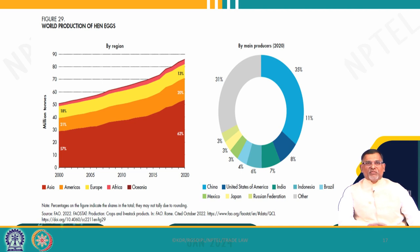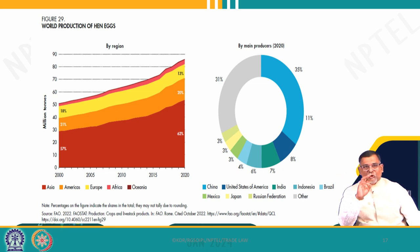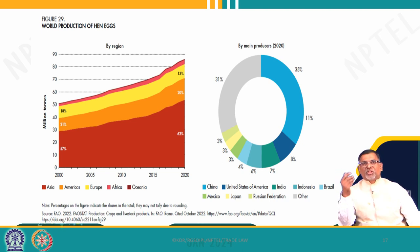For another important protein source — eggs — the largest producers are again Asia, then America, then Europe, Africa and Oceania, following the same pattern. The largest producer is China, then the US, then India. Indonesia is also a big player, then Brazil. The common names appear again across agriculture production — Asian and Americas countries — with European countries coming in very late and not among the largest producers.